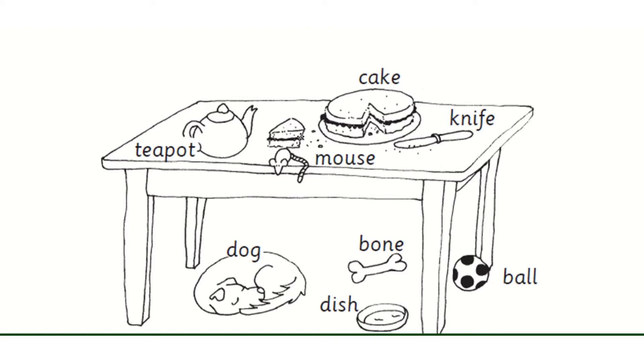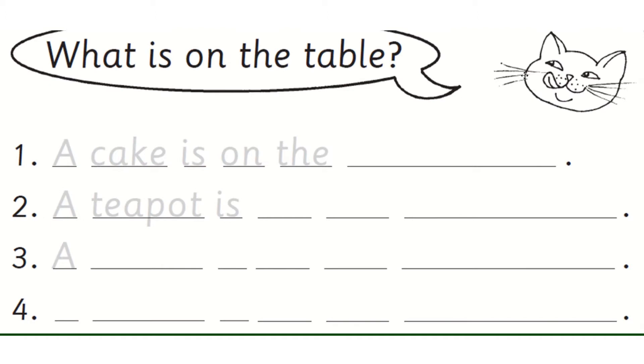OK, you might need to come back to this picture to help you with the first job. This cat is asking what is on the table? And to help you to start off with there are some words in grey that you can copy when you're writing your sentences for me and Miss Creaser. So number one, a cake is on the and we will write table.